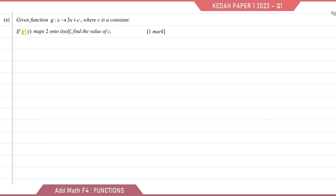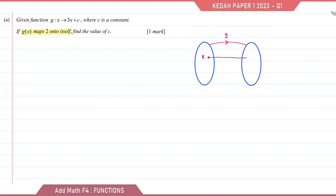In these questions, the keyword is 'maps onto itself.' Using the arrow diagram, the meaning of maps onto itself is that the output of the function is the same as the input. So if the input is x, the output will be x as well. In this question, the input is the number 2, therefore the output will be number 2 as well.